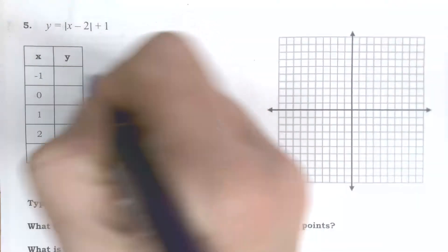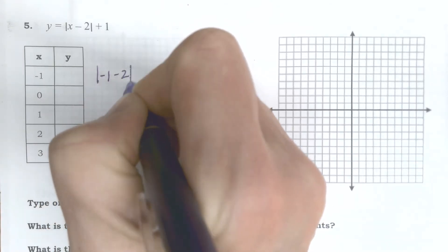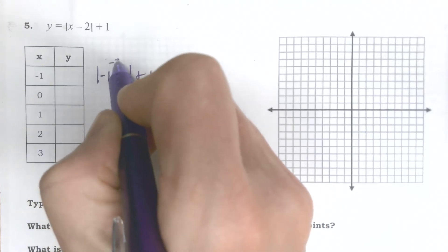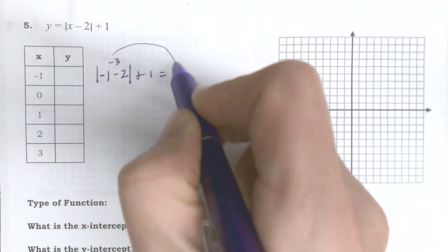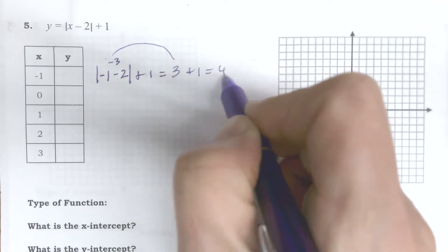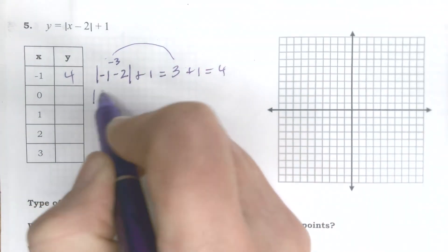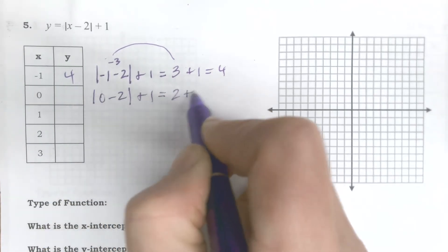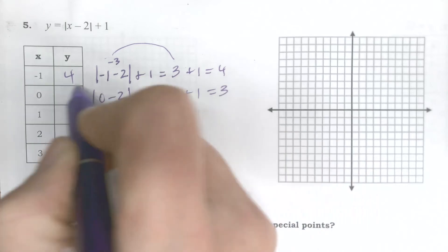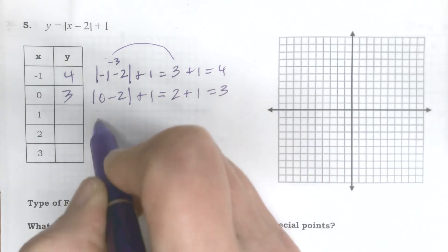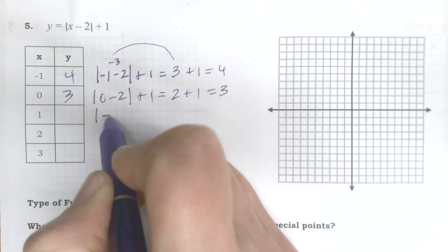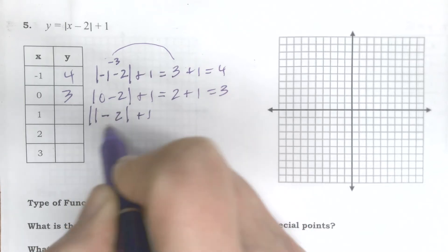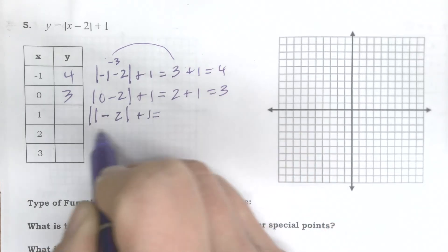So I plug in negative 1. This is absolute value of negative 1 minus 2 plus 1. Well, the absolute value makes that positive, so this would be negative 3, but the absolute value of that makes that positive 3 plus 1, or 4. So 4 goes there. Then I do the same thing. 0 minus 2 plus 1. Well, the absolute value of that makes that positive 2 plus 1, that's negative 1, it makes it positive 1 plus 1, or 2.